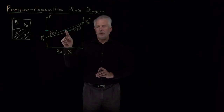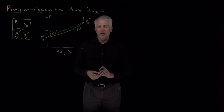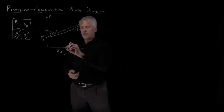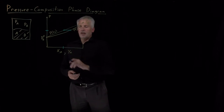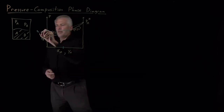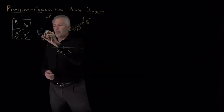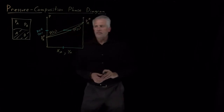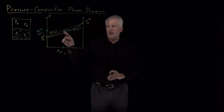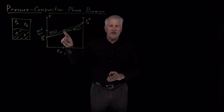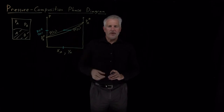In the example we've been discussing, if I have a 50-50 mixture and the vapor pressure is 300 torr, it works out to be 50-50 in the liquid phase and two-thirds, one-third in the vapor phase.